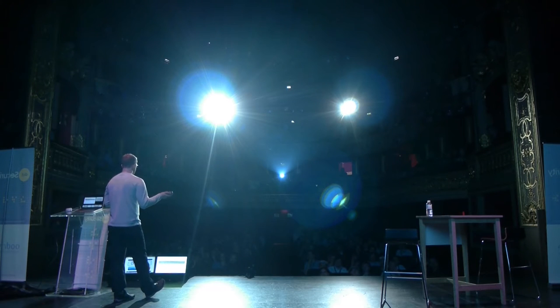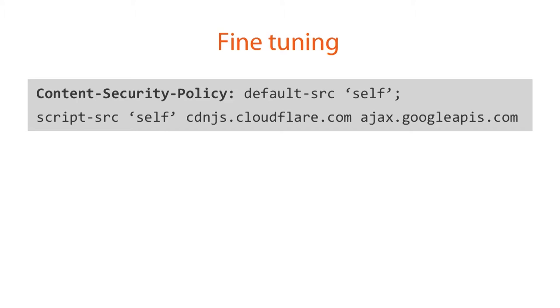This looks like a fairly basic policy, but it would actually be very difficult to deploy to almost any production site because of the amount of content we load from third-party locations. So we start with default-src 'self' and then expand out into the other directives to restrict the scope of locations the browser can load content from. I've specified the script source here — when you specify a new directive, you actually override the default, you don't inherit from it. I load JavaScript libraries from the Cloudflare CDN and jQuery from the Google CDN, so those sources need to be whitelisted.